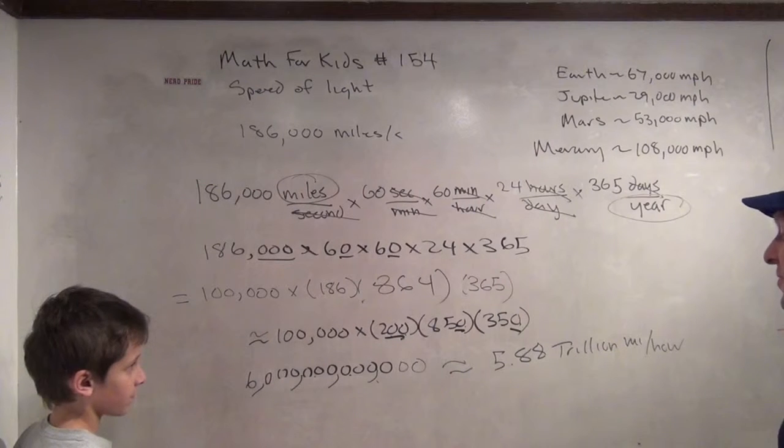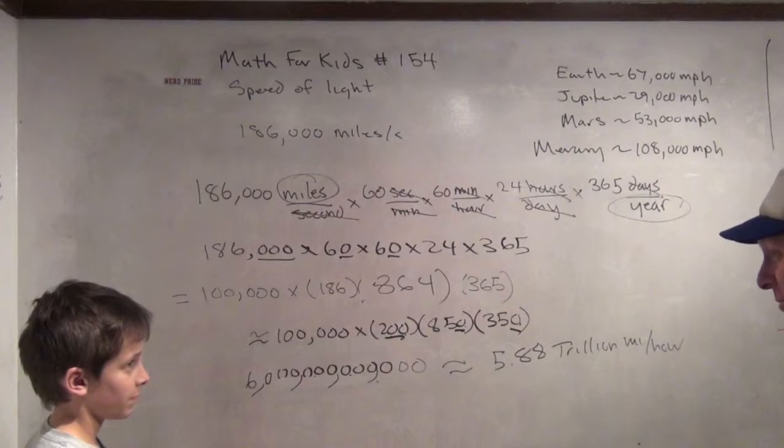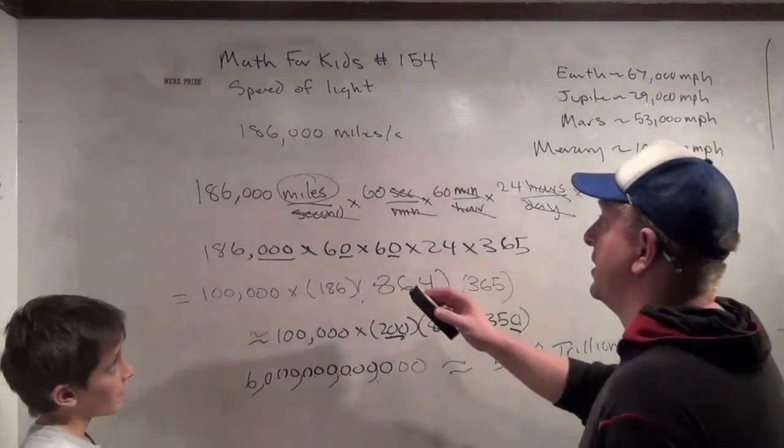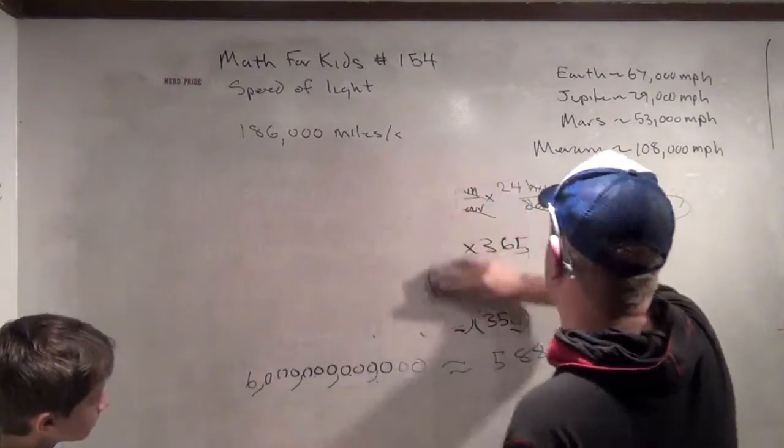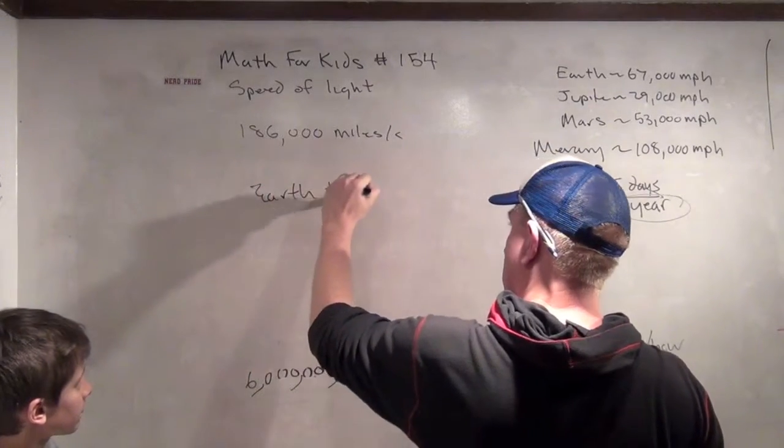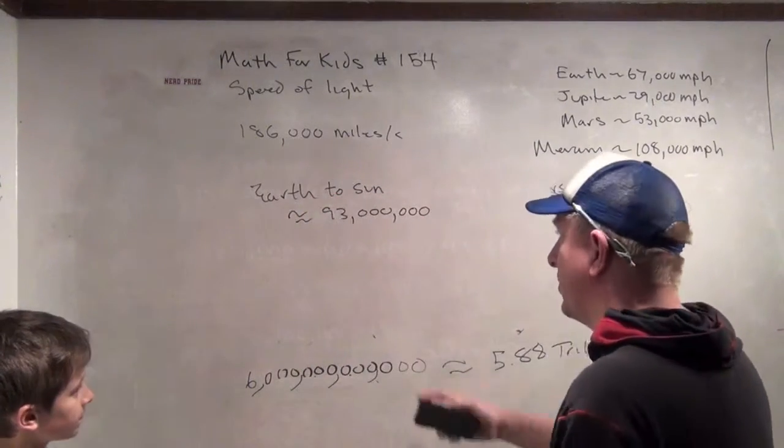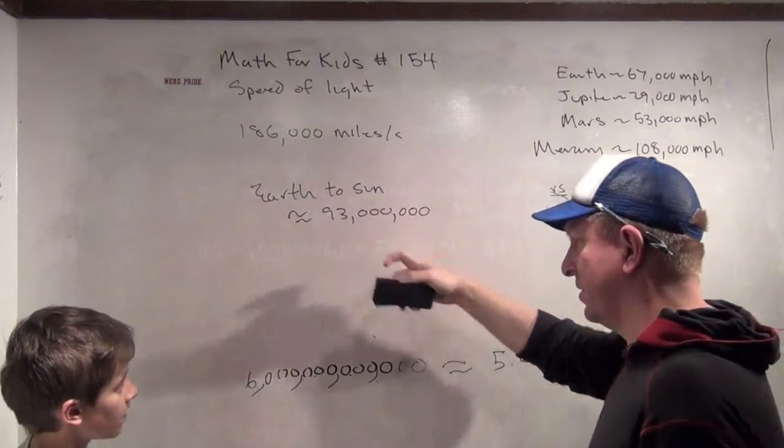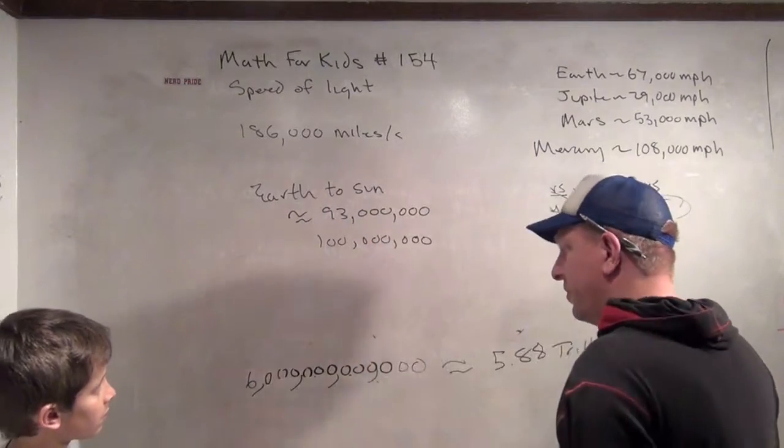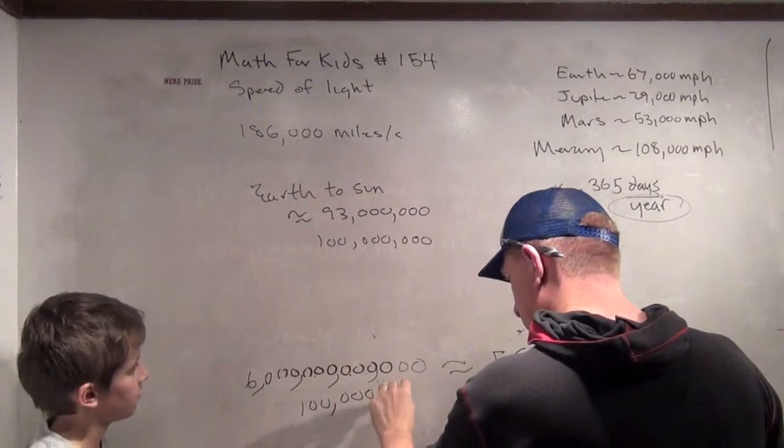Now, how far is 5.88 trillion miles? Pretty far. Pretty far. Pretty far. Do you remember how far away the Earth was from the sun? It was 93 million. Okay. So, the Earth to the sun... 93 million? Yep. So, let's... To make that number simple, what could we round that up to? A hundred... A hundred million. A hundred million. Which I'll write down here.